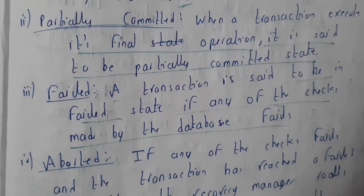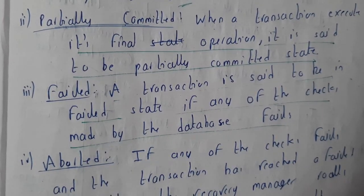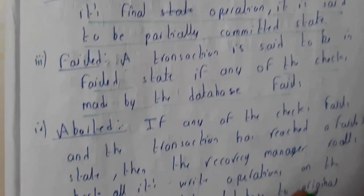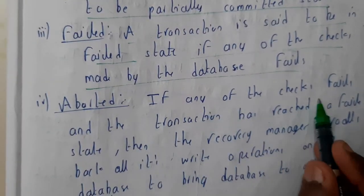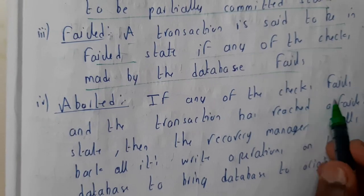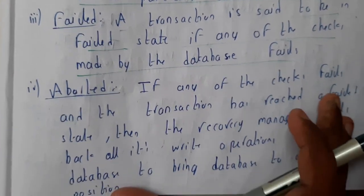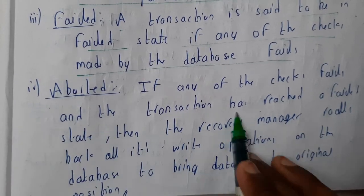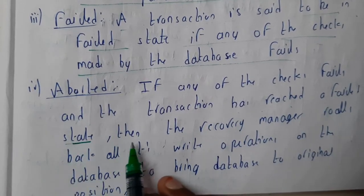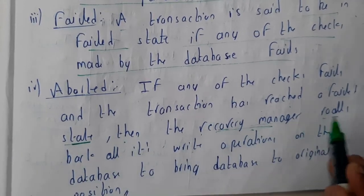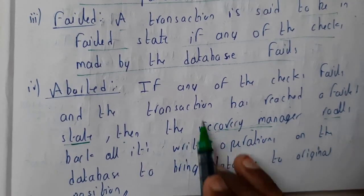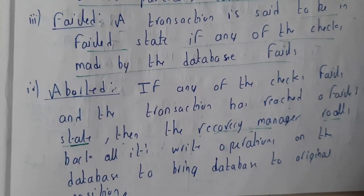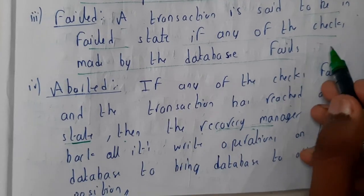Failure: a transaction is said to be in failure state if any of the transaction checks made to the database have failed — a comparison between the database values and our values does not match, or any kind of technical issue. When checks fail, the transaction has reached a failure state. The recovery manager tool will handle this, which we'll cover in the next unit.